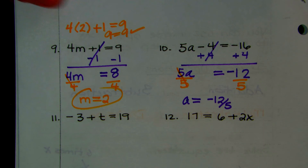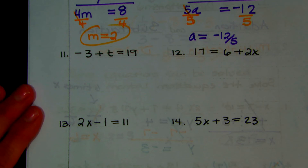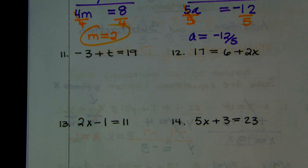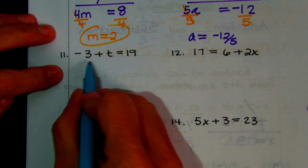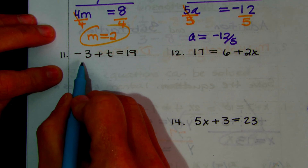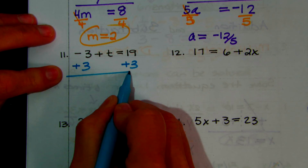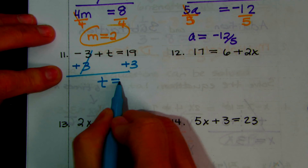I'm not going to switch number 11 around — I want to show you what you do if you don't change the terms. You have negative 3 plus T equals 19. You want T by itself. You have a negative 3 to move — it's negative, so you put plus 3. Negative 3 plus 3 adds out. You have a positive T that comes down. Don't forget your equal sign. And then 19 plus 3 is 22.